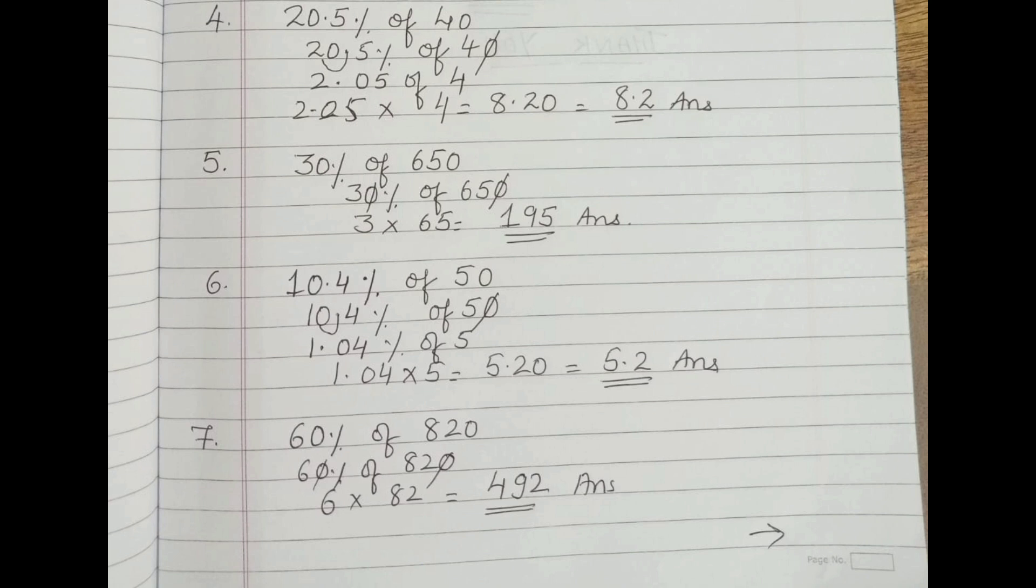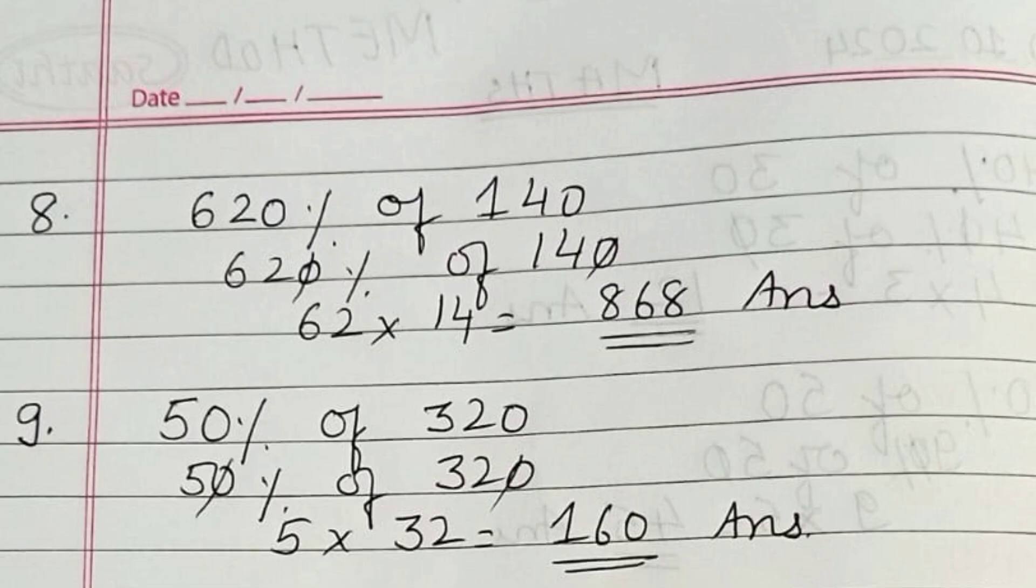The eighth question: 620 percentage of 140. Cut zeros from both sides. The new numbers are 62 into 14. 62 into 14 equals 868. That's the answer.